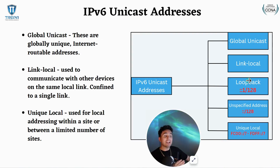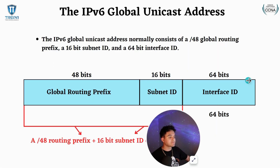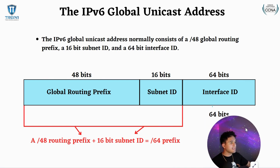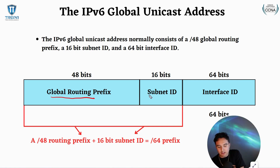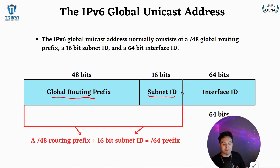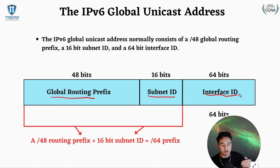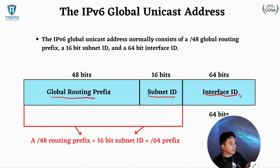Looking at how the global unicast address is laid out: typically 48 bits are going to be the global routing prefix, this is going to be its subnet ID, and then the remaining 64 bits are going to be the interface ID. I went over this in the last video, so go back to that if needed.